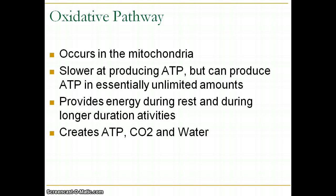After glycolysis, the oxidative pathway occurs in the mitochondria — the powerhouse of the cell — where most energy breakdown happens. It's slower than the glycolytic pathway but sustainable for a long time. It provides energy at rest and during longer duration or less intense activities, such as sitting or watching a video. The oxidative pathway creates ATP, CO2, and water. You breathe out the CO2, which plants then use to create carbohydrate — completing the cycle.